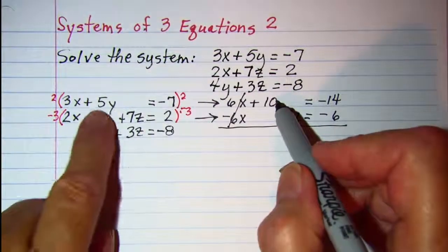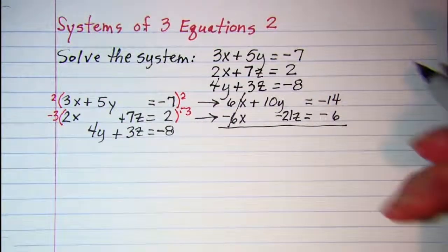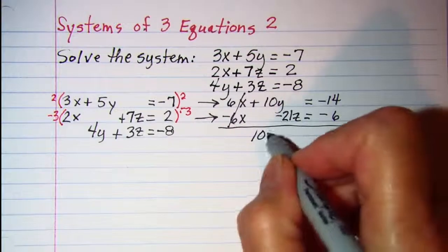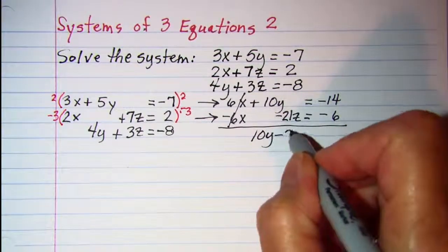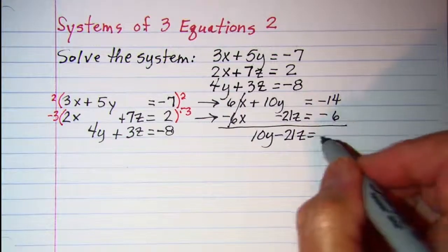Oh I left my y off here. I have 10y - 21z = -20.